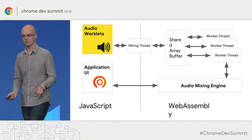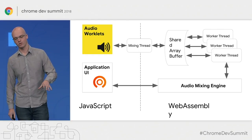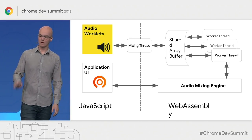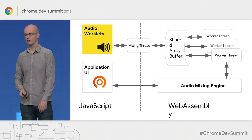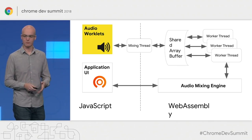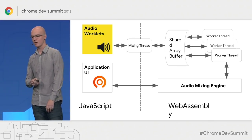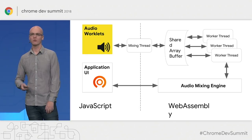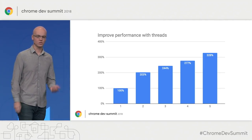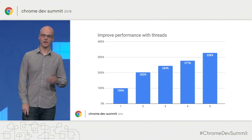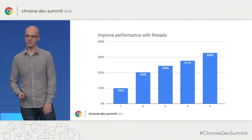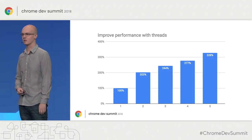Let's look at their architecture. On the JavaScript side, they have their application UI, which talks to an audio mixing engine. That audio mixing engine spawns off multiple worker threads in WebAssembly, and each of these worker threads can talk to the same piece of Shared Array Buffer memory. This Shared Array Buffer memory is then passed to the mixing threads, which passes it to the audio worklet, which produces the final result. Adding just a single additional thread doubled their performance, and by the time they added five threads, they had more than tripled the performance of their application.